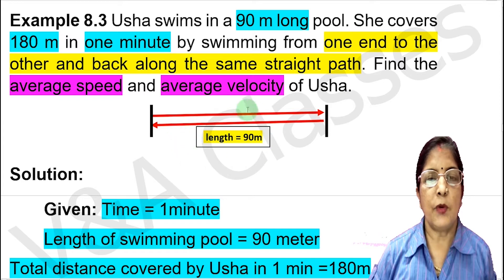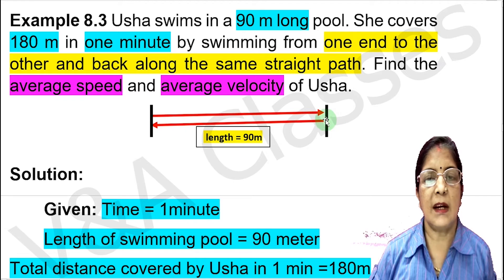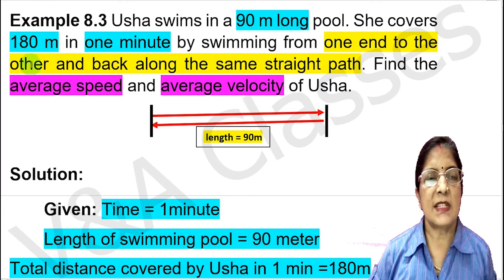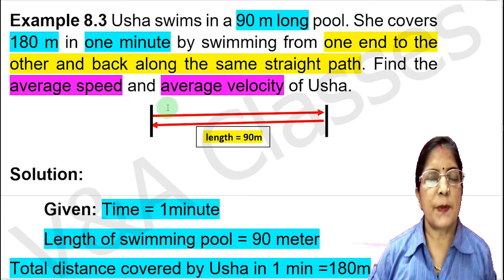The question means there is a swimming pool with a length of 90 meters. Ursa swims from one end to the other end and back along the same straight path. This way she covers 180 meters of distance and the time taken is 1 minute. We need to find her average speed and average velocity.